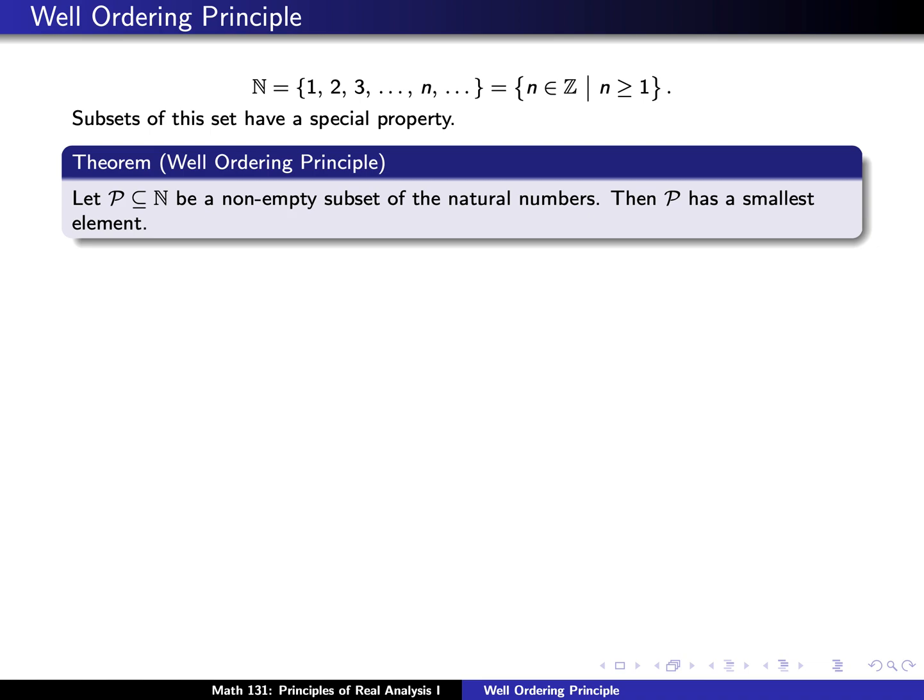If you have any non-empty subset of the natural numbers, then this always has a smallest element. For example, you could take the subset consisting of the odd integers — these will be 1, 3, 5, and so forth — and there is a least element, namely the number 1. Or we might consider p to be the collection of even integers: 2, 4, 6, and so forth. In this case the least element is the integer 2.